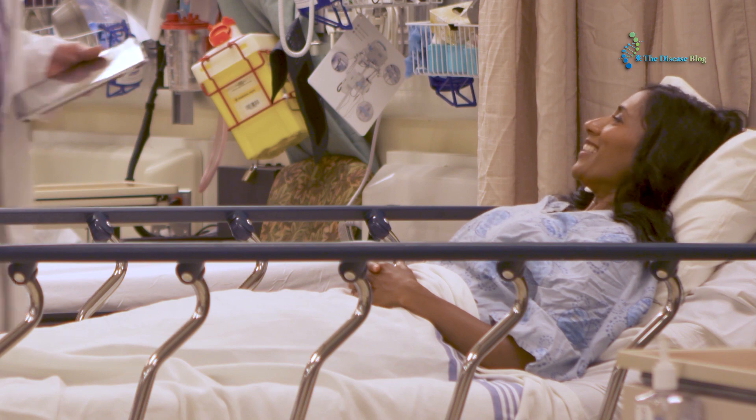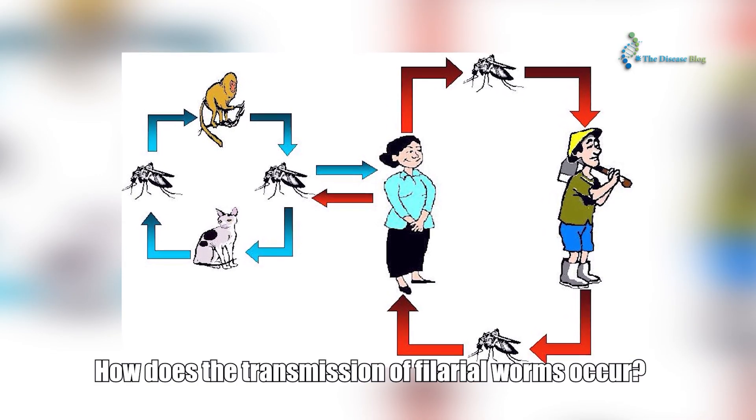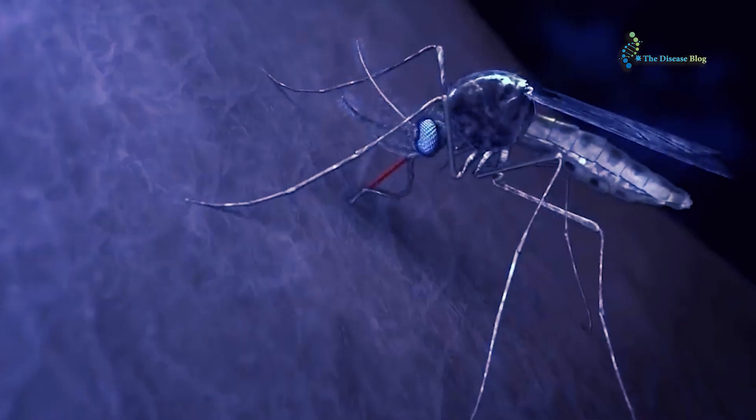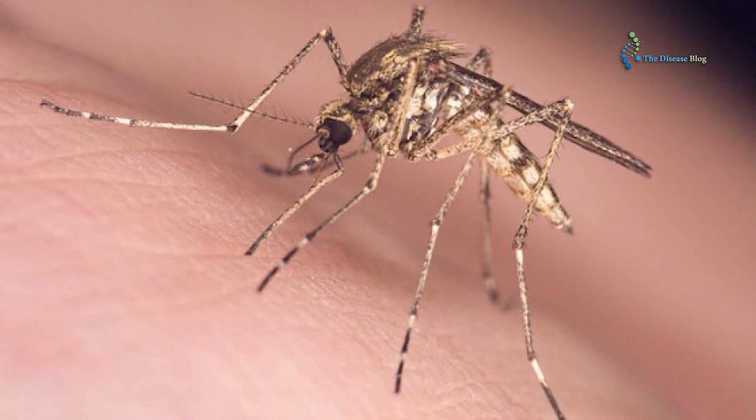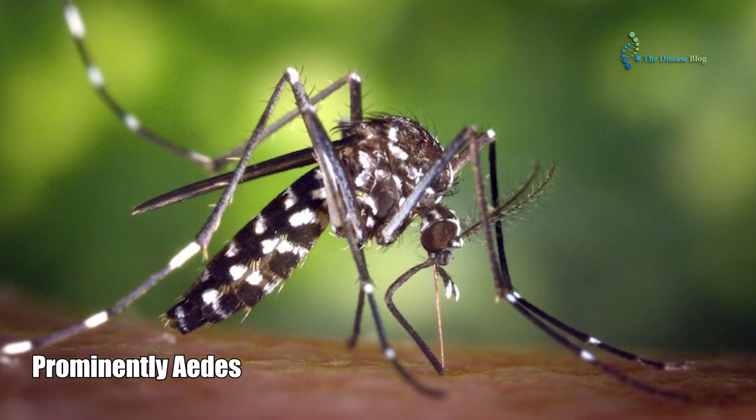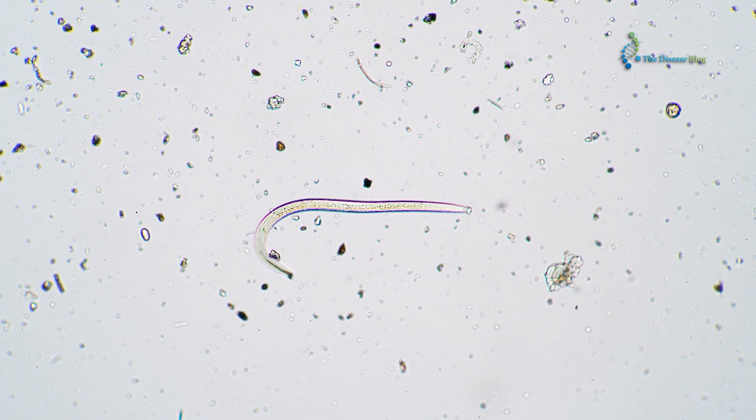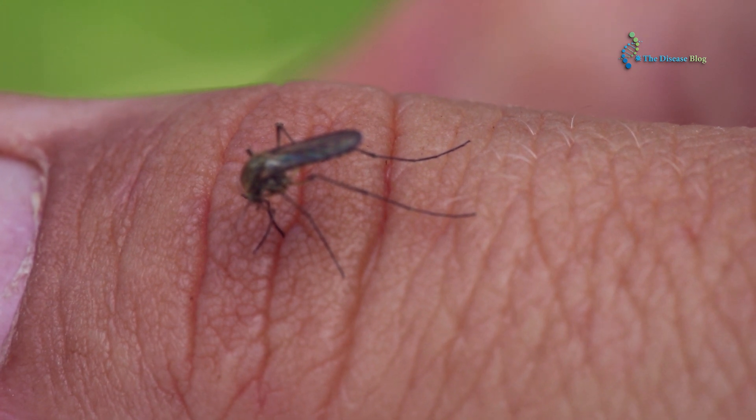The Wuchereria bancrofti affects breasts, legs, arms, scrotum, and vulva, and is the most common cause of lymphatic filariasis, responsible for causing nine out of ten infections. How does the transmission of filarial worms occur? Lymphatic filariasis is a mosquito-borne disease, meaning that it spreads through an infected mosquito bite to a healthy human.